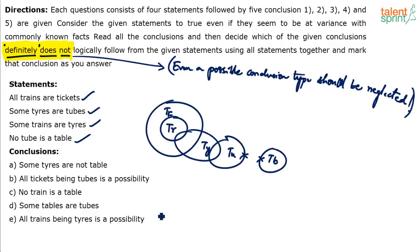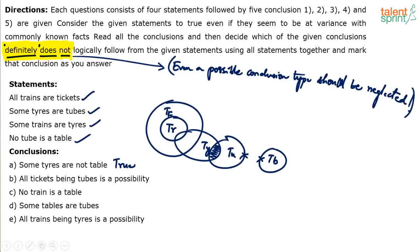Now look at the conclusions. First conclusion: some tires are not tables. This is definitely true. The tires overlapping with tubes cannot be tables, because tables cannot overlap with tubes. Therefore, those tires which overlap with tubes can never be tables. So there will always be some tires which are not tables — this conclusion is definitely true.